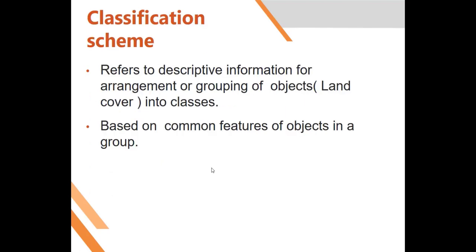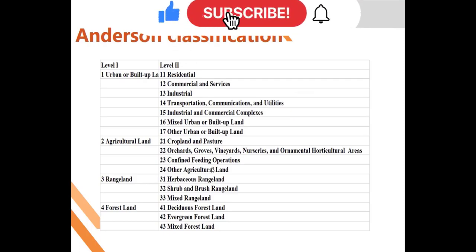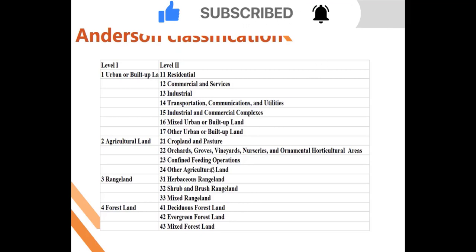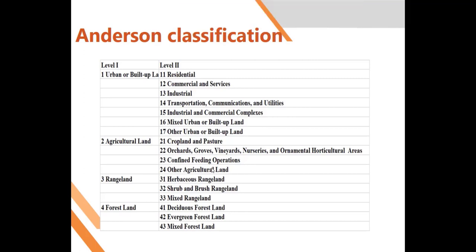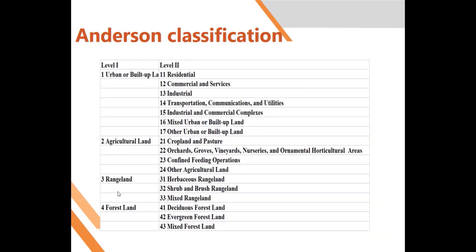Before you do any classification, the first thing you should always look at is the classification scheme. A classification scheme refers to a set of rules that guide how we group our objects — knowing what to include and exclude under which class. Here is an example: the Anderson classification scheme. Under level one we have urban, agriculture, range land, forest land, water, wetland, barren land, tundra, and snow.